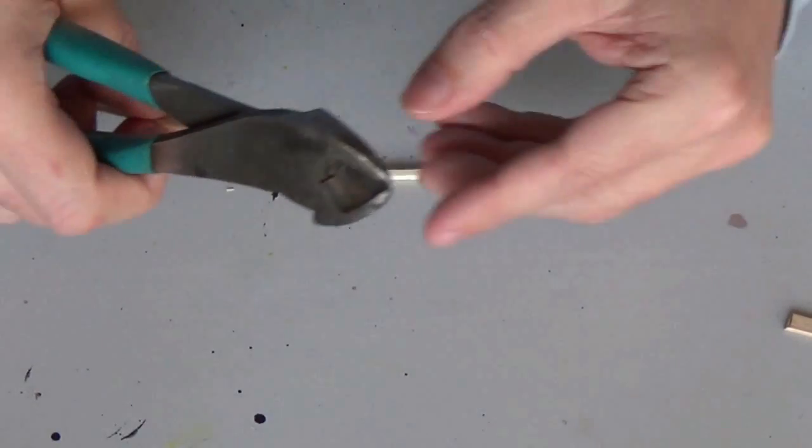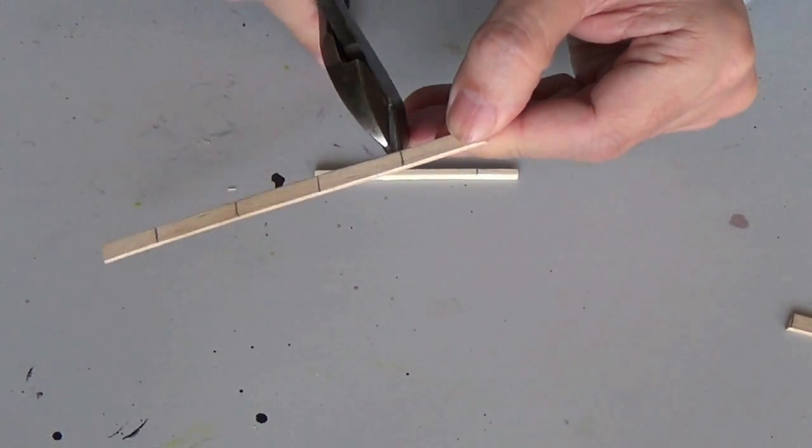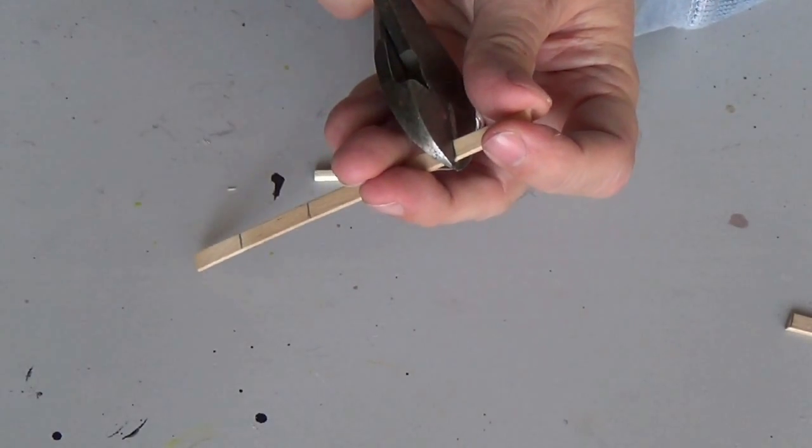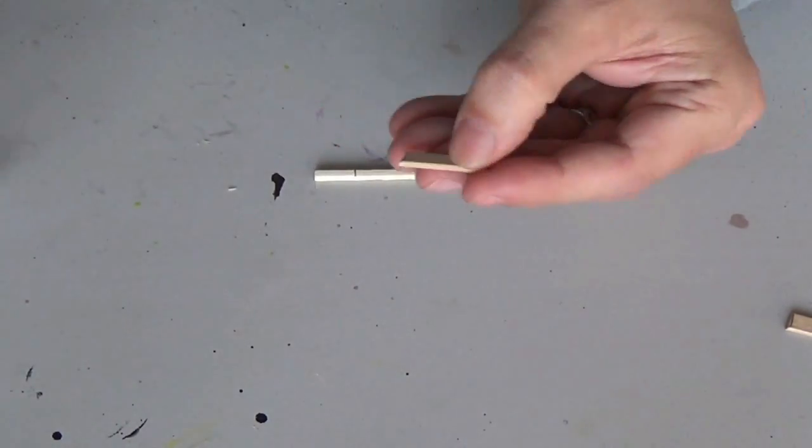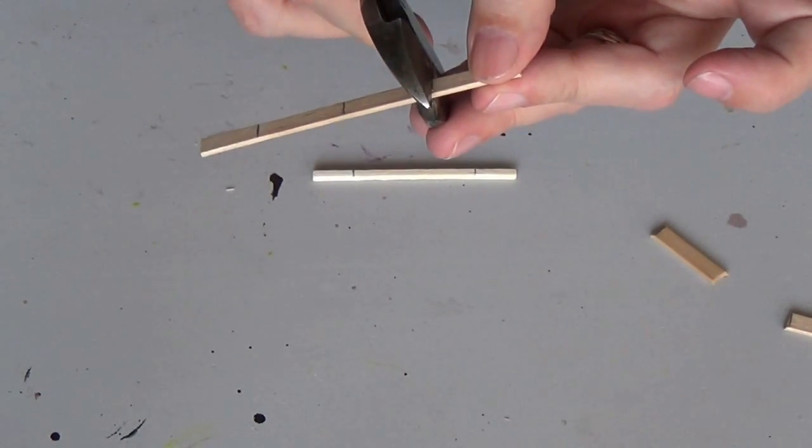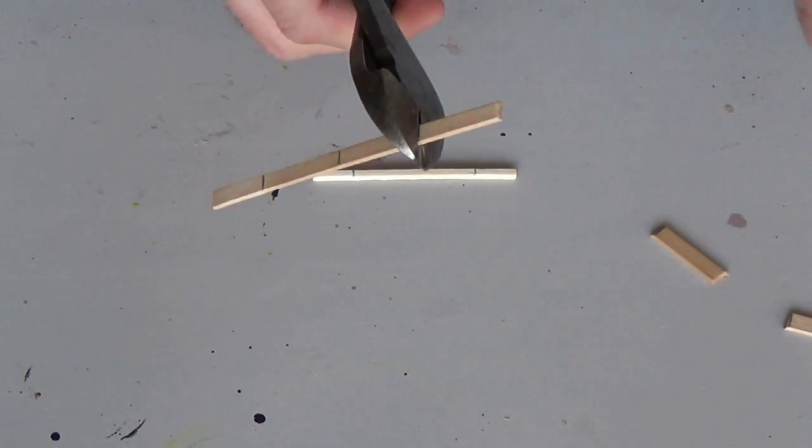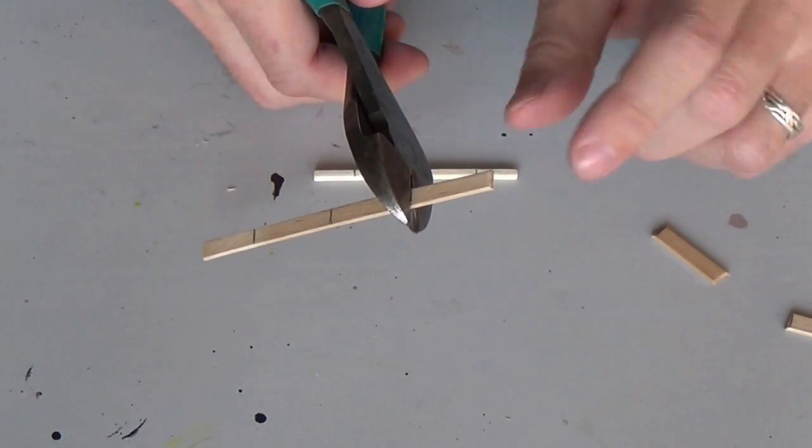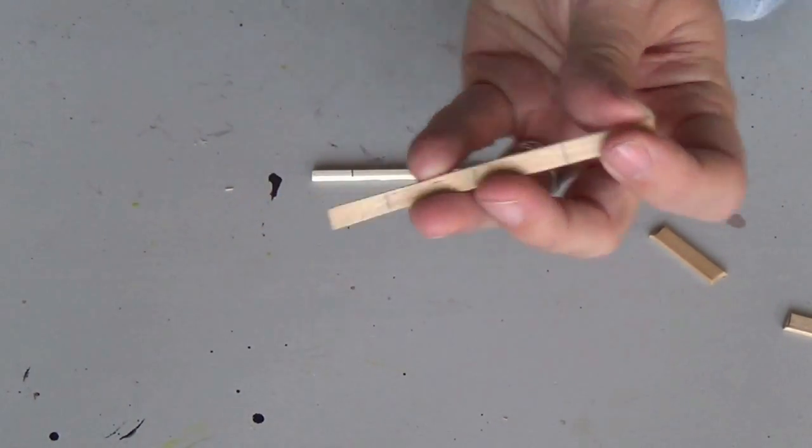You see how I hold that so that it doesn't go flying? Just put it on there and then hold each side and then go like that. That way your piece won't go flying. If you pull it like this and cut it, that piece is going to go flying. So make sure that you hold both pieces when you cut it.